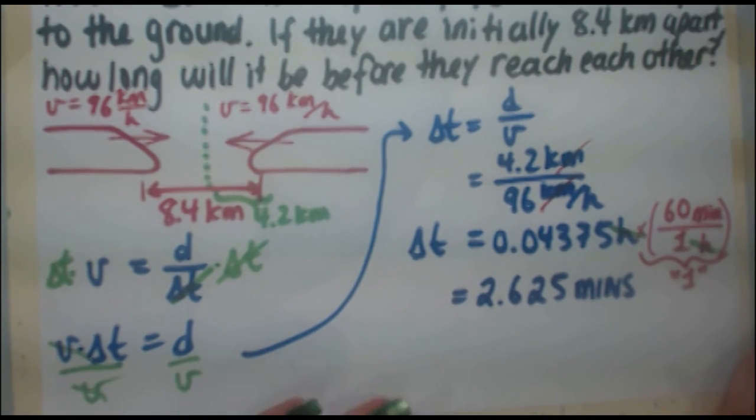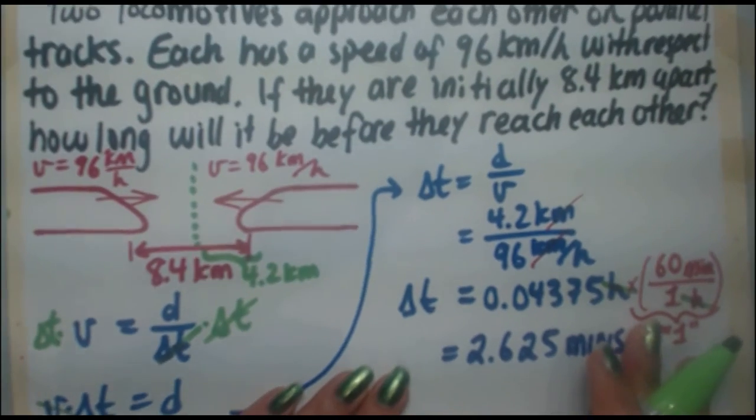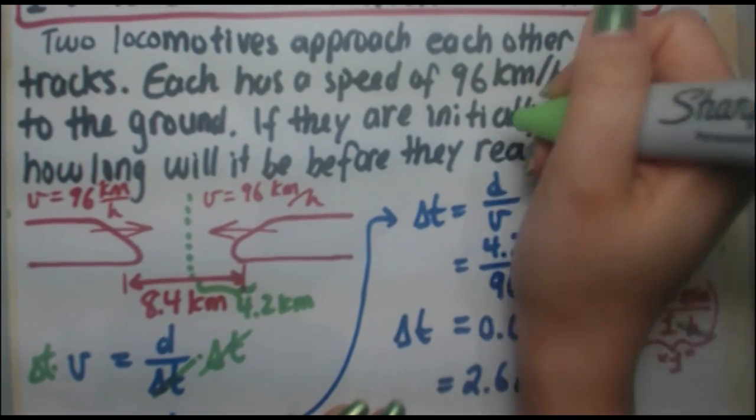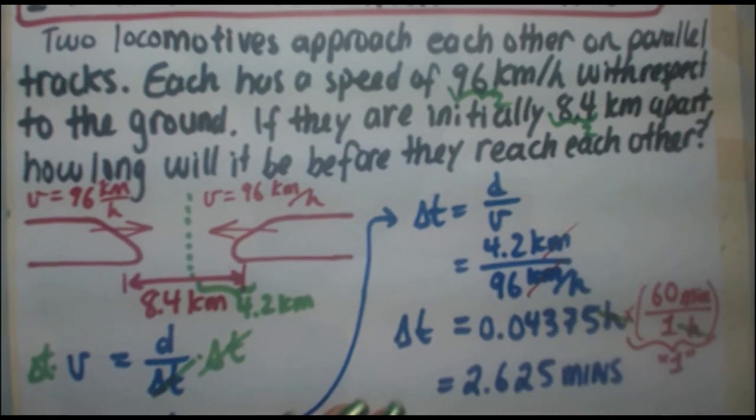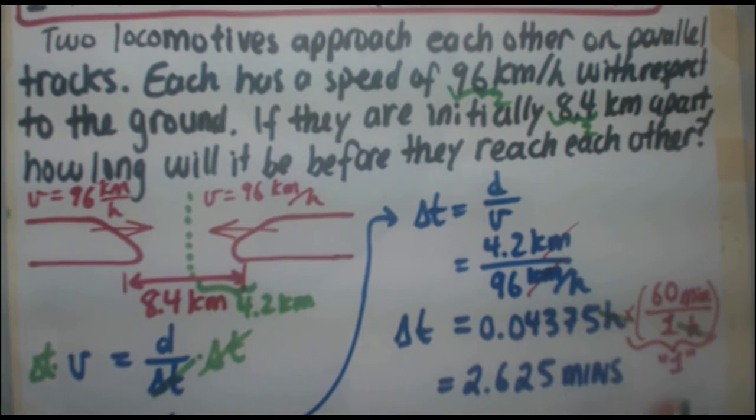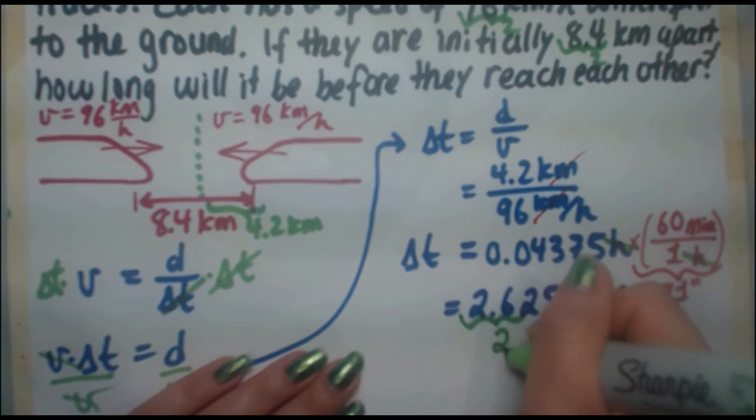As with all the other questions, our last step is to verify the number of sig figs. We've got 2 sig figs in the quote for the speed, we've got 2 sig figs in the quote for the distance, so we're going to finalize this by quoting this value to 2 sig figs.